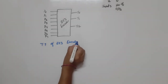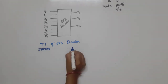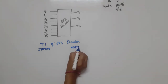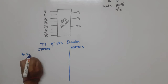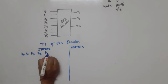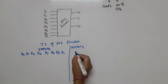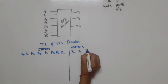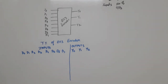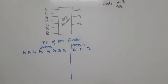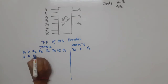The truth table has inputs and outputs. There are 8 inputs: D0, D1, D2, D3, D4, D5, D6, and D7. There are 3 outputs: Y0, Y1, Y2. At any time, one input is high and its corresponding binary combination is the output.